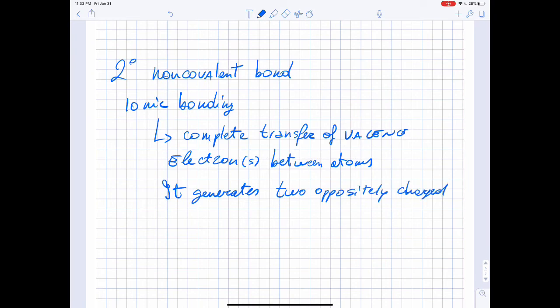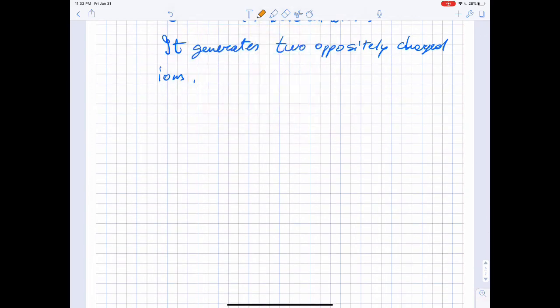In ionic bonds, the metal loses electrons to become a positively charged cation, whereas the non-metal accepts those electrons to become a negatively charged ion.